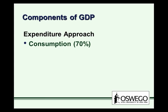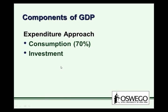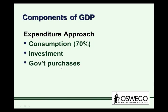In the expenditure approach, we have several components. The largest component is consumption expenditures. Then investment. Then government purchases at the federal, state, and local level. And finally, we put in the rest of the world — exports minus imports, which we call net exports.